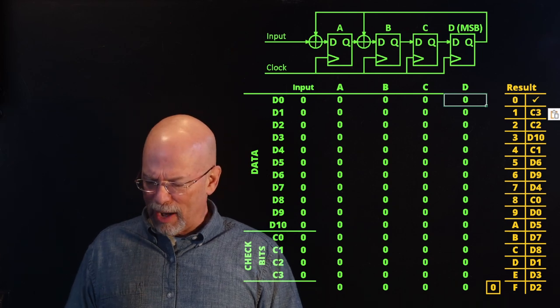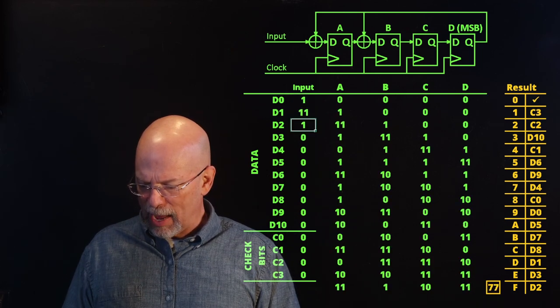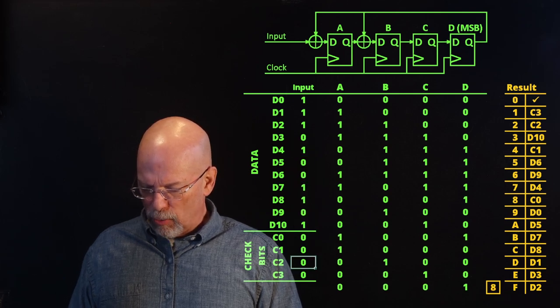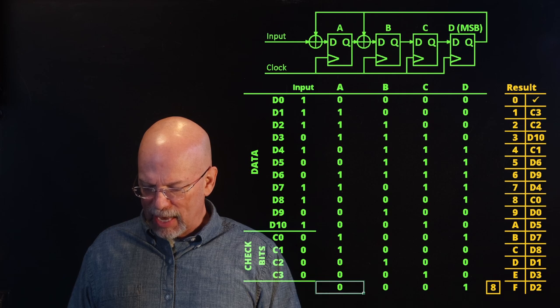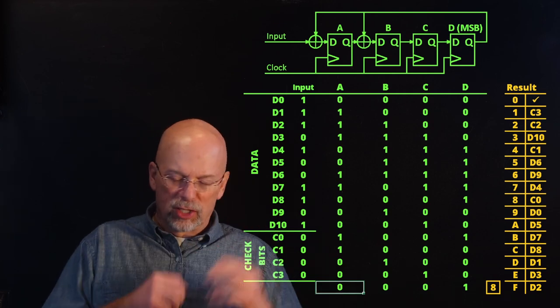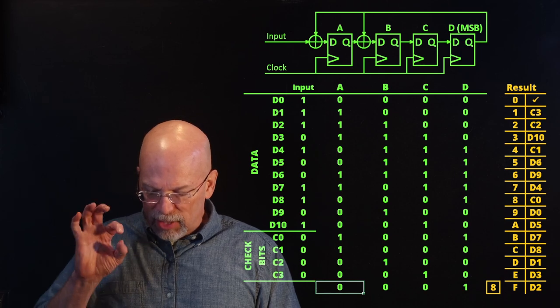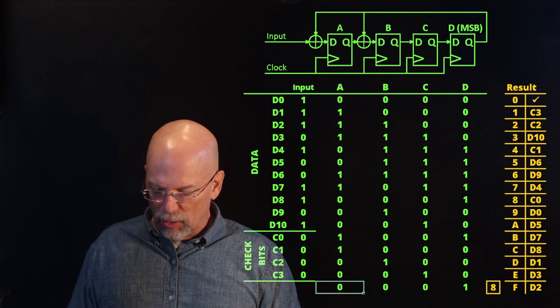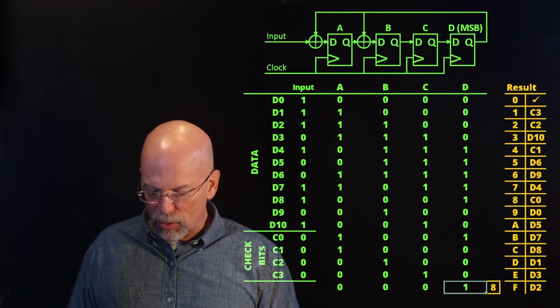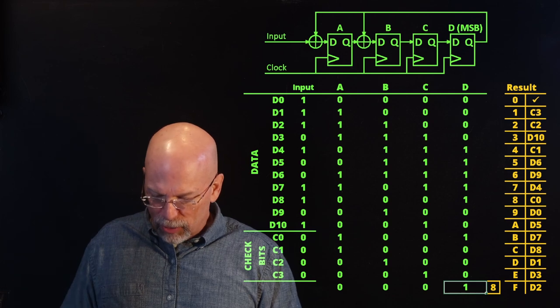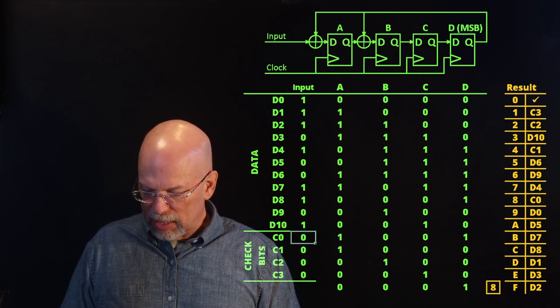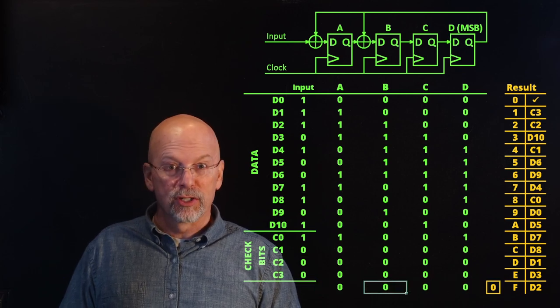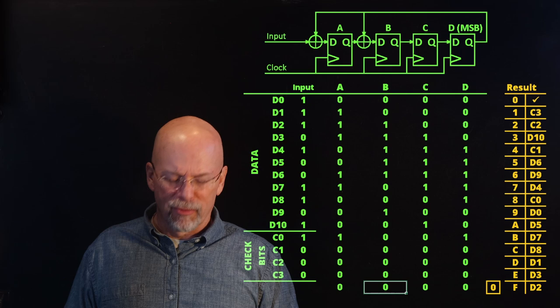Now, sure, that works great for having no data, but what happens if we put data? Well, let's put some ones in here. All right. Now, if you remember from the CRC, what it said was that we generate the remainder after putting the check bits as all zeros, and then you substitute the checks for the remainder that we got. So I'm going to put, starting with D is the most significant, 1, 0, 0, 0. And notice that our remainder is zero.